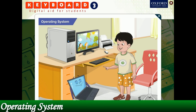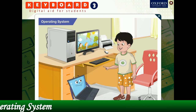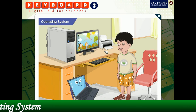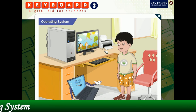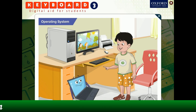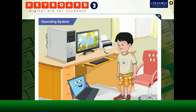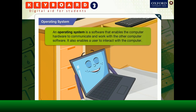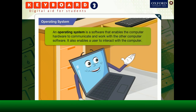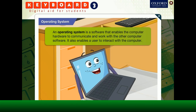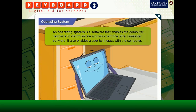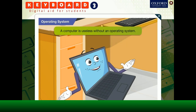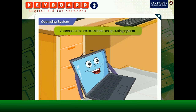I got it now. Toggle, Windows 7 is a software which is an operating system as well. Yes. Well done, Goggle. Toggle, can you explain more about the operating system? Definitely, Goggle. An operating system is a software that enables the computer hardware to communicate and work with the other computer software. It also enables a user to interact with the computer. A computer is useless without an operating system.